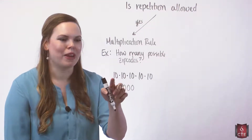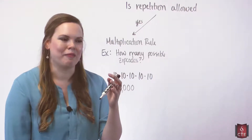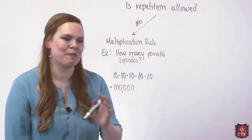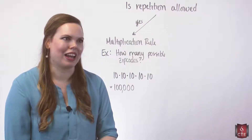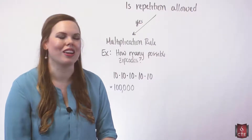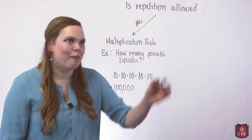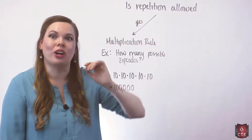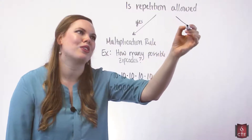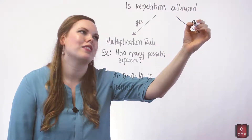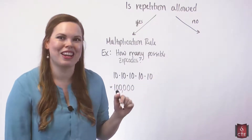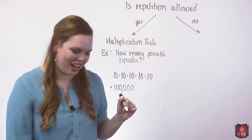We could even restrict it — like making the first digit nine or nonzero — for different constraints. But just simply looking at a multiplication rule problem like this, we can move on. If the answer is no, we cannot use repetition, then we might be able to use permutations or combinations. But which one? So the next question you need to ask is: does order matter?